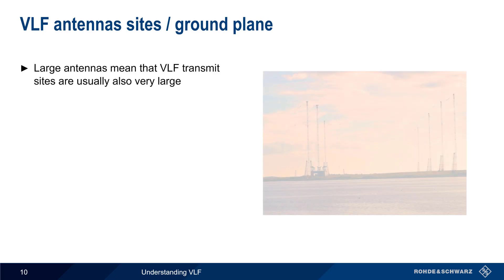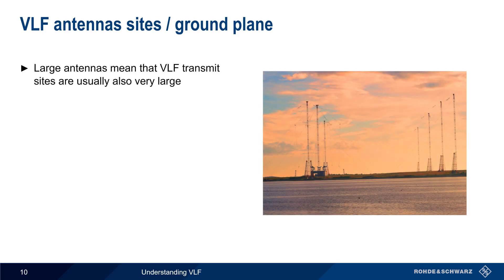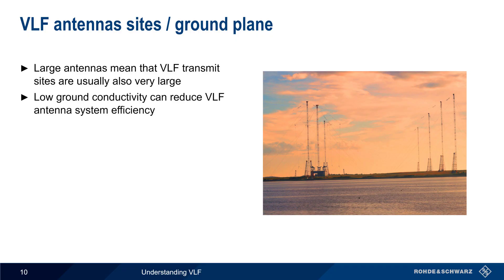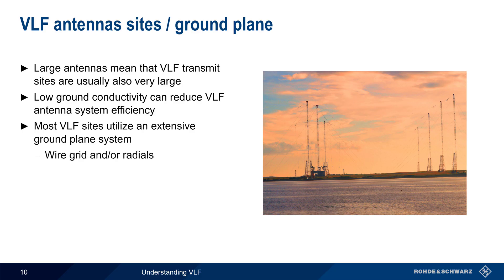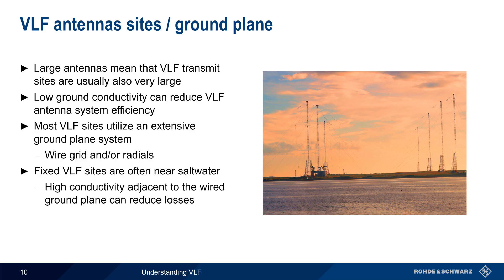As we just discussed, VLF antennas tend to be quite large, and thus require very large transmit sites. One potential siting issue is that low ground conductivity can reduce antenna system efficiency, and thus most VLF sites incorporate a rather extensive ground plane system consisting of wire grids and/or radials. Another way of obtaining the necessary ground conductivity is to place VLF transmit sites near saltwater, since saltwater has very high conductivity. This higher conductivity adjacent to the wired ground plane can help to reduce losses, and can reduce the overall size of the man-made ground plane needed for efficient operation at VLF.